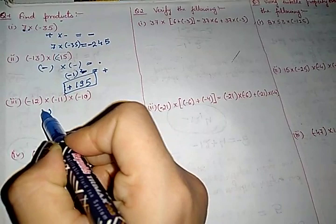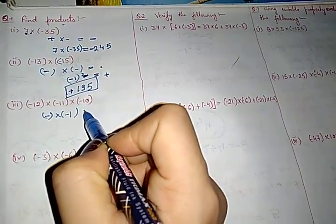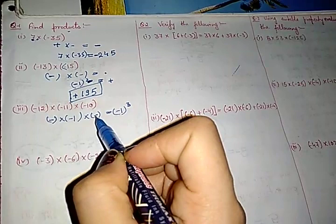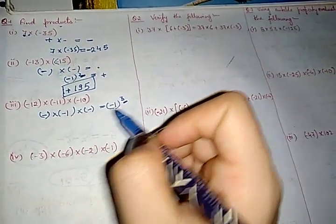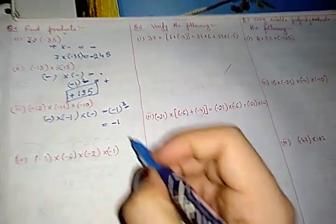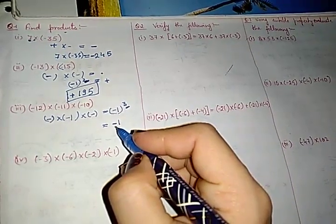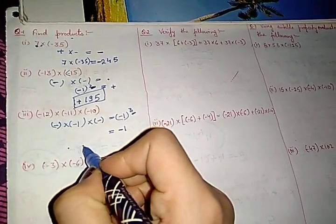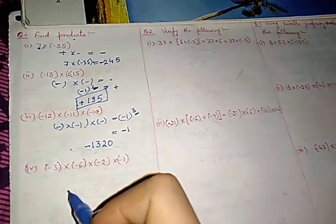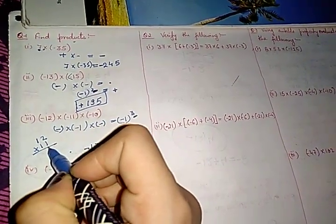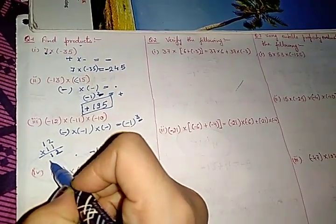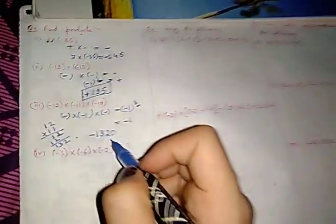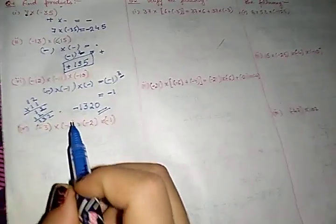Similarly, see here: minus times minus times minus — that means minus to the power 3. There are three negative integers, and the power is odd. Therefore our answer will come in negative. By multiplying all of them — first multiply 12 into 11 to get 132, then 132 into 10 to get 1320. So your answer will be minus 1320.